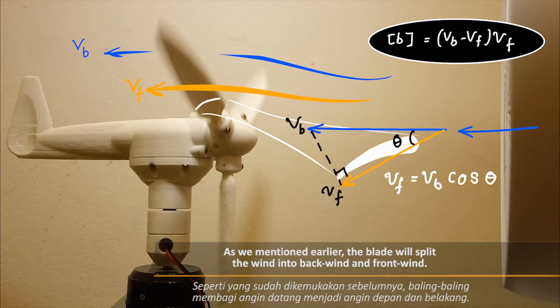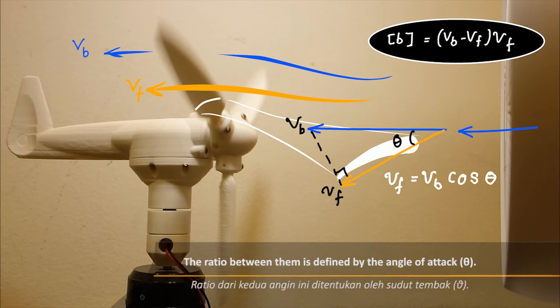As we mentioned earlier, the blade will split the wind into back wind and front wind. The ratio between them is defined by the angle of attack, theta.